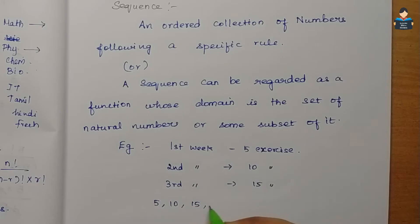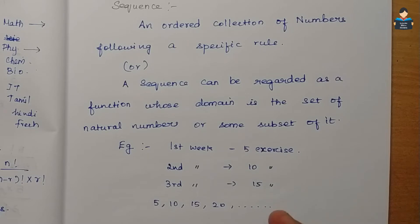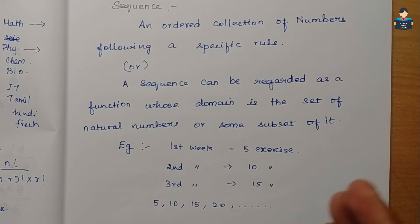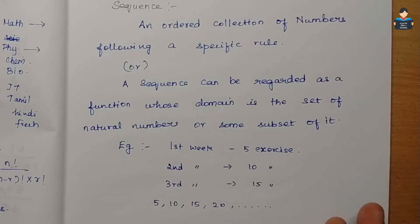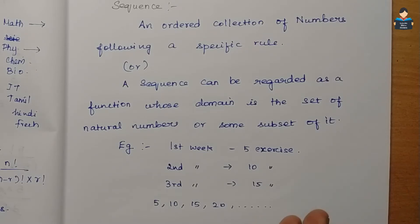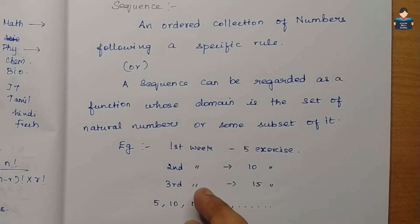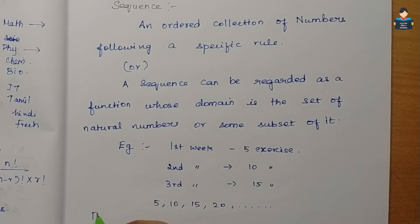...10, 15, and in the 4th week we are doing 20 exercises, and so on. We are following a particular pattern. So this is our sequence. Now, sequences can be of two types: finite sequence and infinite sequence.